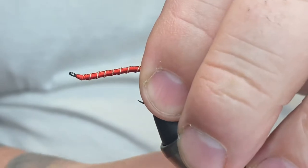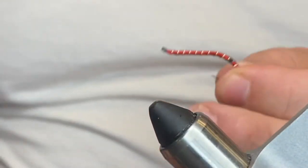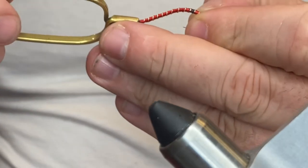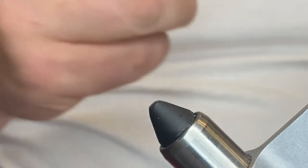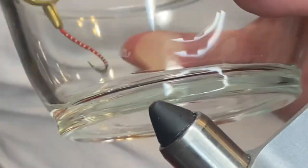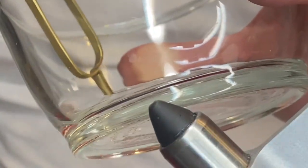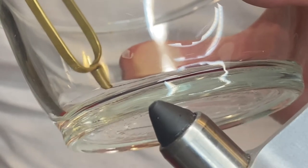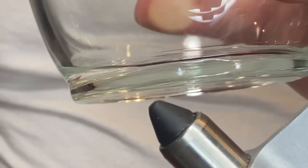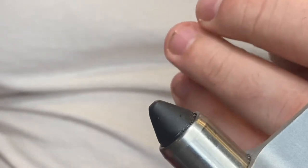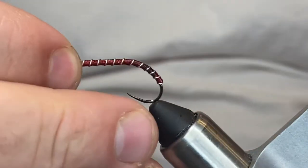We're going to take this out of our vise and hold it with a hackle plier. What I got in this bowl right here is just regular acetone. We're going to give this fly a quick dip, leave it in there for a few seconds, then pull it back out and put her back in the vise.